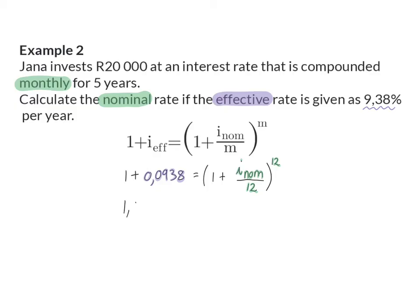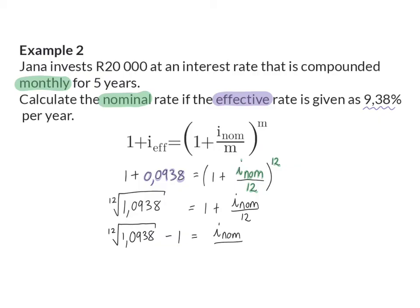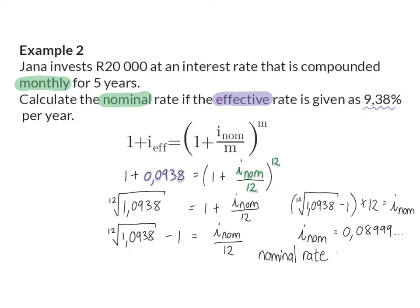To solve for INOM, I start by taking the 12th root of 1.0938 on the left to eliminate the exponent of 12 on the right. Next, I subtract 1 on the left to remove the plus 1 on the right. Then, since INOM is still divided by 12, my last step is to multiply by 12. Remember not to round until the final step. Calculating gives 0.08999..., and multiplying by 100 gives a rounded answer of 9% per annum.